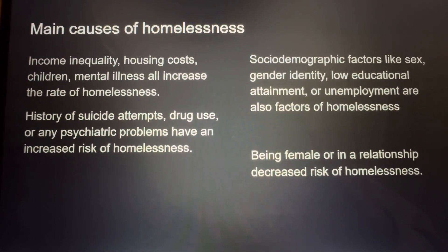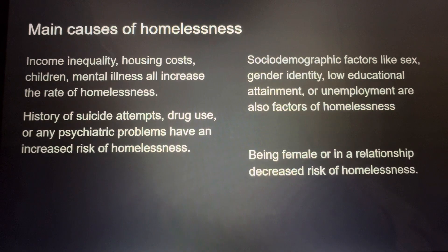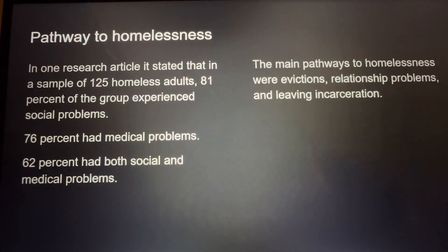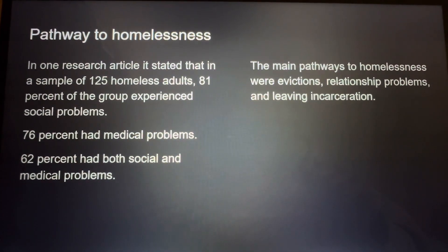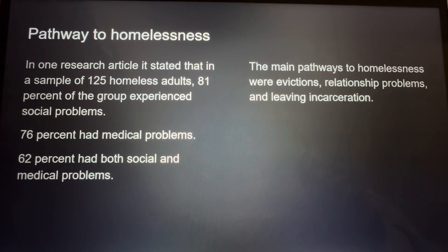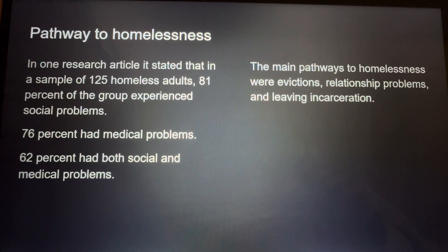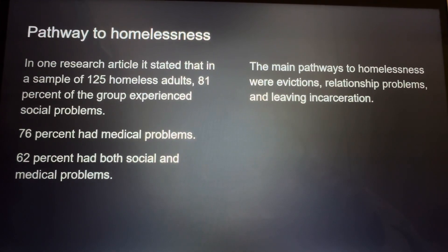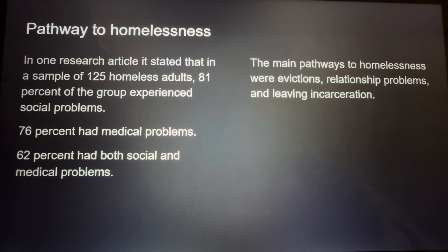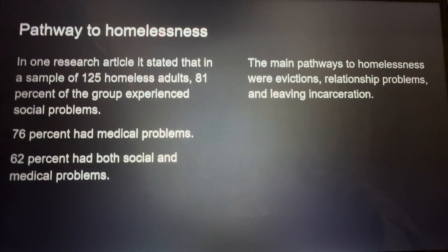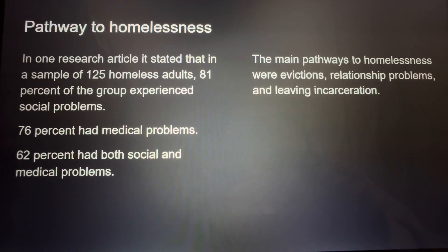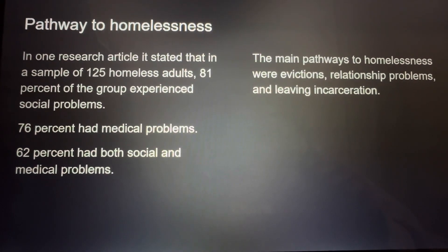However, research found that being female or in a relationship significantly decreased the risk of homelessness in an individual. The pathways to homelessness: in one research article, it stated that in a sample of 125 homeless adults, 81% experienced social problems, 76% had medical problems, and 62% had both social and medical problems before homelessness. This indicates that the main pathways to homelessness were evictions, relationship problems such as divorce, and leaving incarceration.